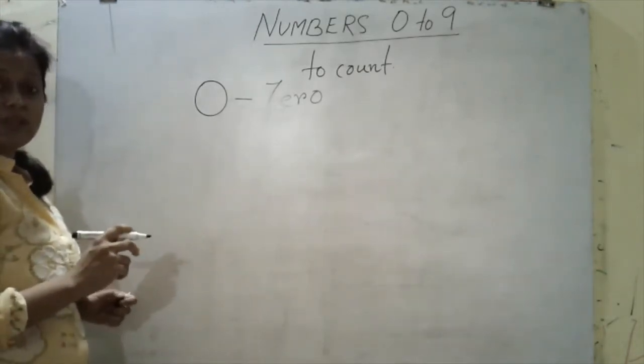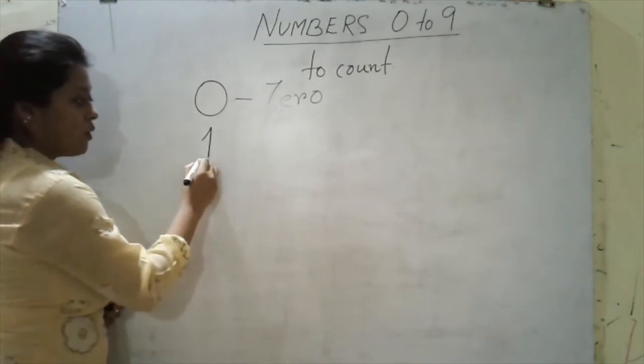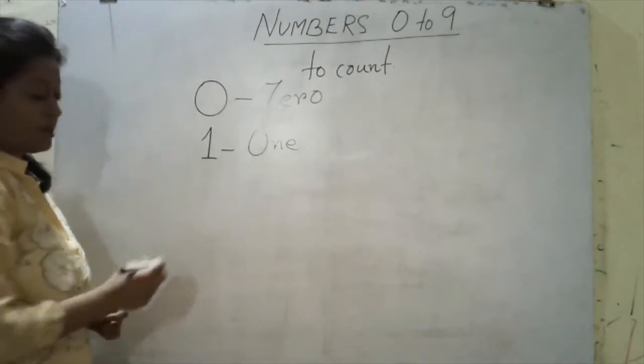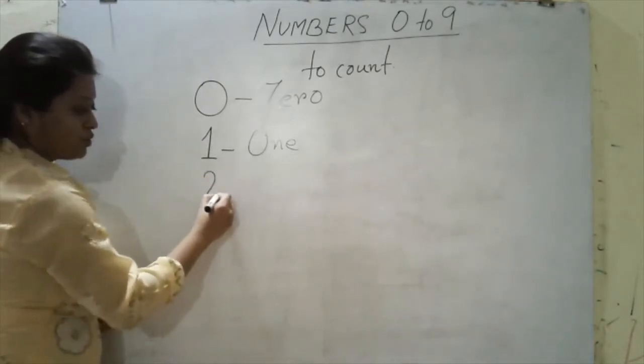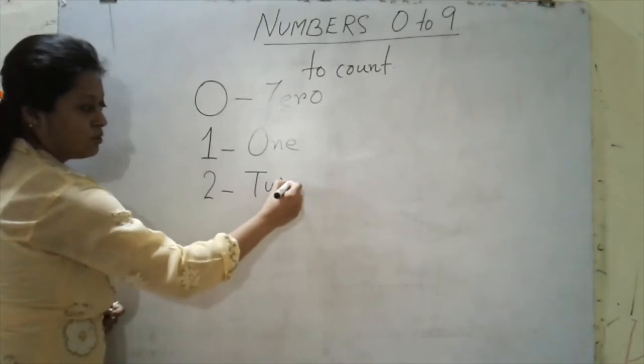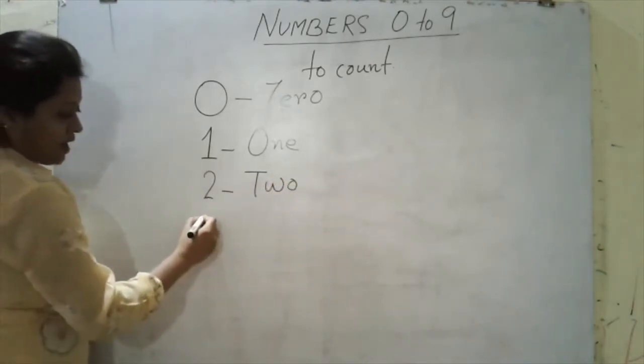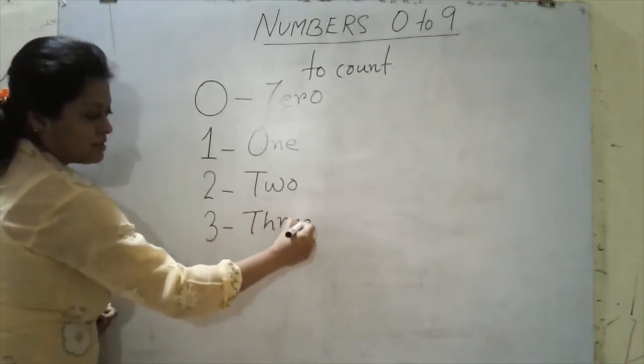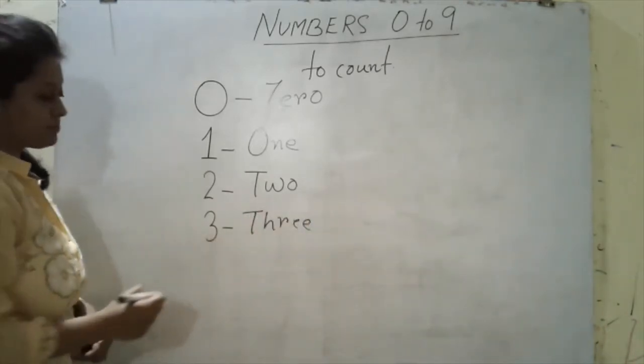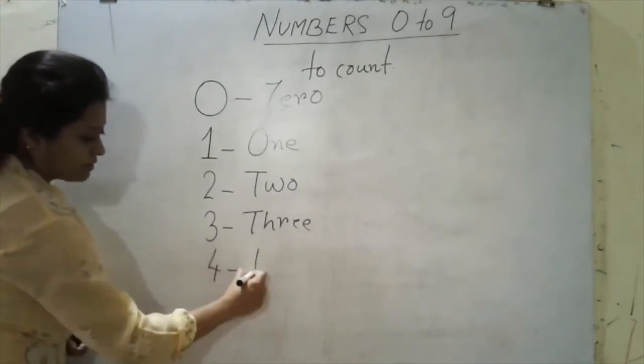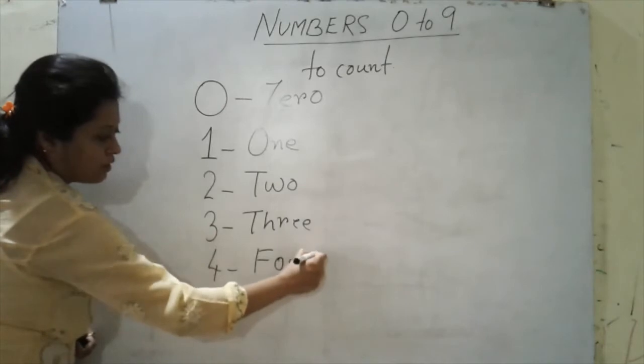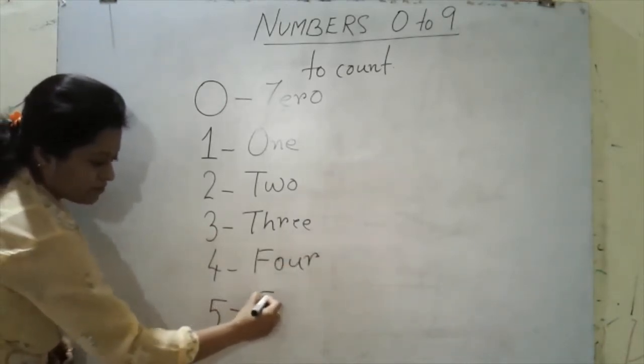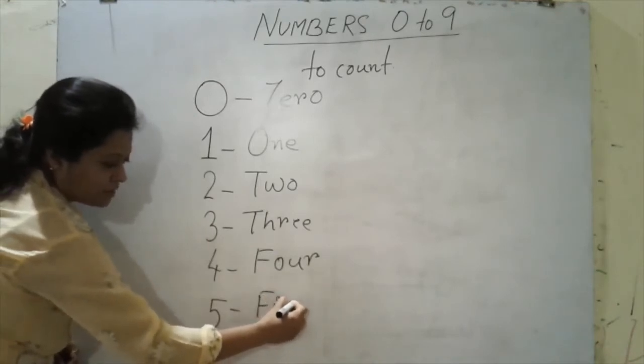So let's start with the next number. What comes after zero? One. O-N-E. One. After one, two. T-W-O. Two. After two, three. T-H-R-E-E. Three. And four. F-O-U-R. Four. Five. F-I-V-E. Five.